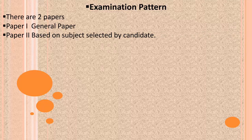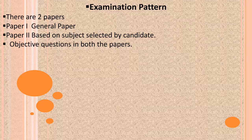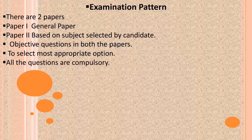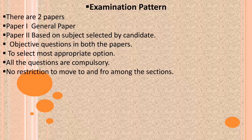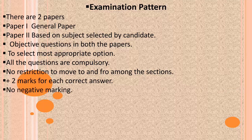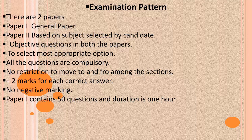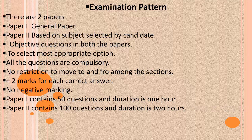The examination pattern consists of two papers. Paper 1 is a general paper and Paper 2 is based on the subject selected by the candidate. In both papers, objective questions are asked and you must select the most appropriate option. All questions are compulsory, and there is no restriction on moving between sections — you can solve any question first. There are 2 marks for each correct answer and no negative marking. Paper 1 contains 50 questions with a duration of 1 hour. Paper 2 contains 100 questions with a duration of 2 hours.